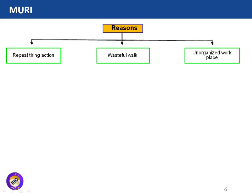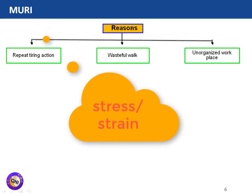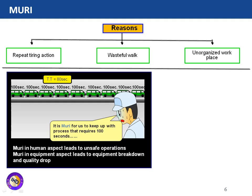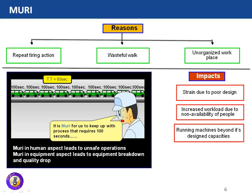The third M is Muri, which means human or equipment stress or strain. Reasons for Muri include repetitive tiring actions, wasteful work, and an unorganized workplace leading to unnecessary motion. For example, if the takt time is 80 seconds but the process cycle time is 100 seconds, the process cannot meet customer demand, leading to stress and overburden. In human terms, Muri leads to unsafe operations; for equipment, it leads to breakdowns and quality drops. Impacts of Muri include strain due to poor design, increased workload from non-availability of people, and running machines beyond their design capacities.